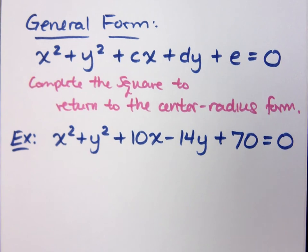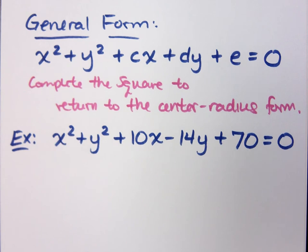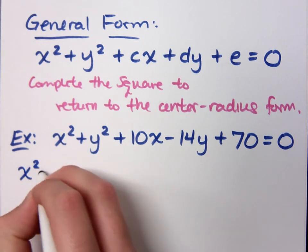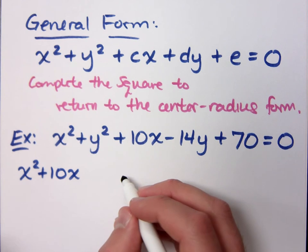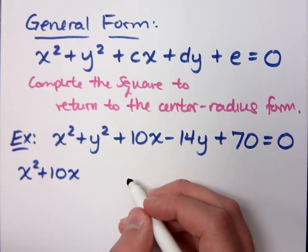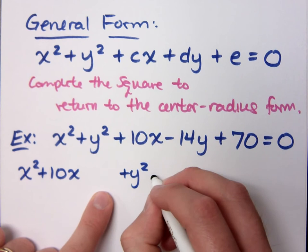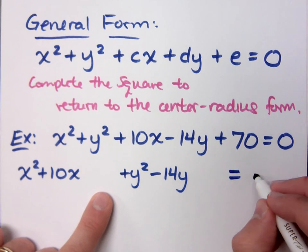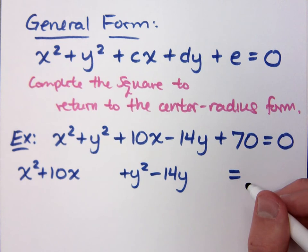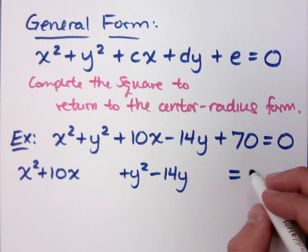Before I can complete the square, I have to set it up so that completing the square works for me. I don't want x squared mixed with y's. Rearrange your terms. When you rearrange, you have x squared plus 10x — leave some space, because I'm going to complete the square — plus y squared minus 14y. And the 70 is on the wrong side. Remember: variables on one side, constants on the other. The same thing applies here when making this conversion from general to center-radius form.